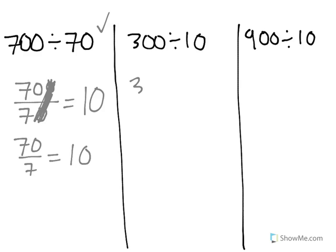In the next problem, we have 300 divided by 10. Let's try that same trick. We can get rid of one 0 on the top if there's a 0 on the bottom, and now we have 30 divided by 1, which is equal to 30.